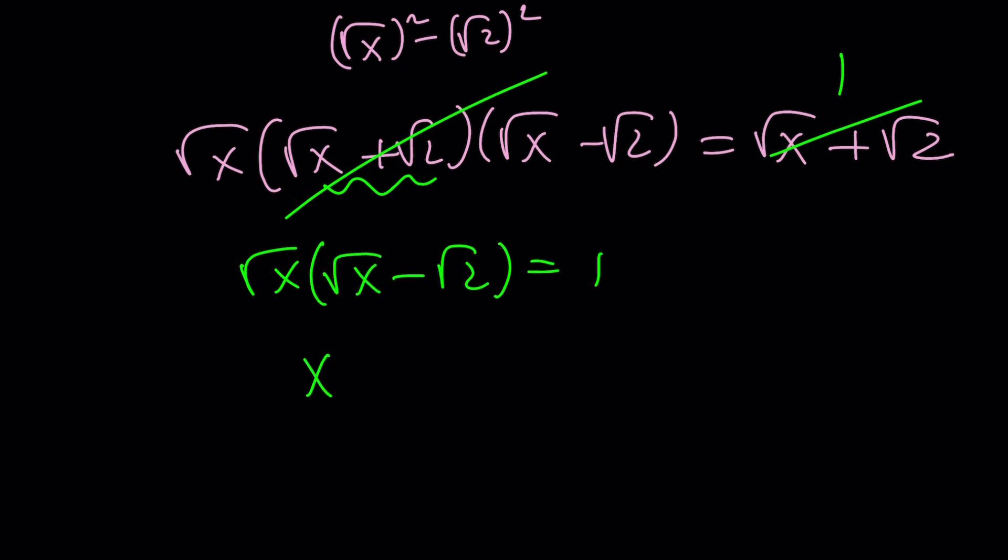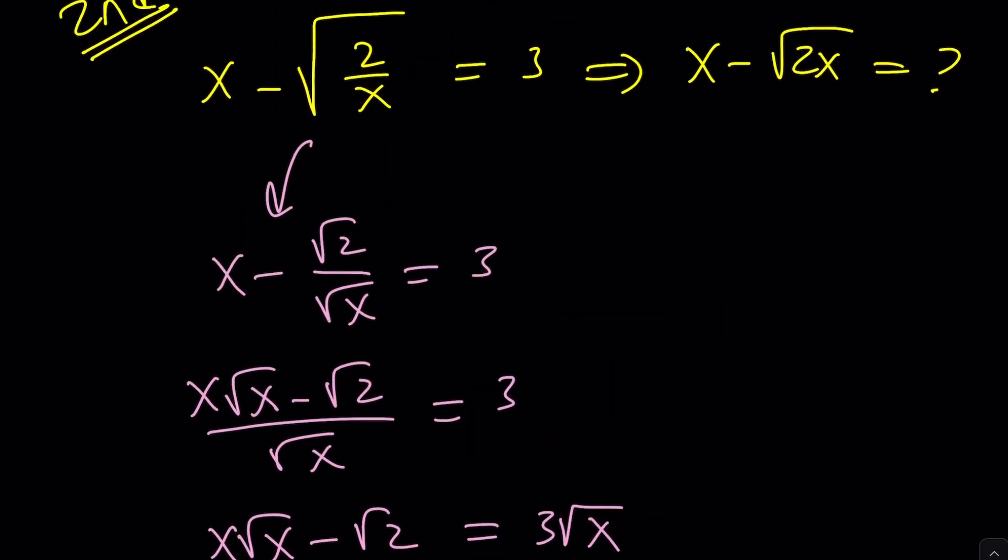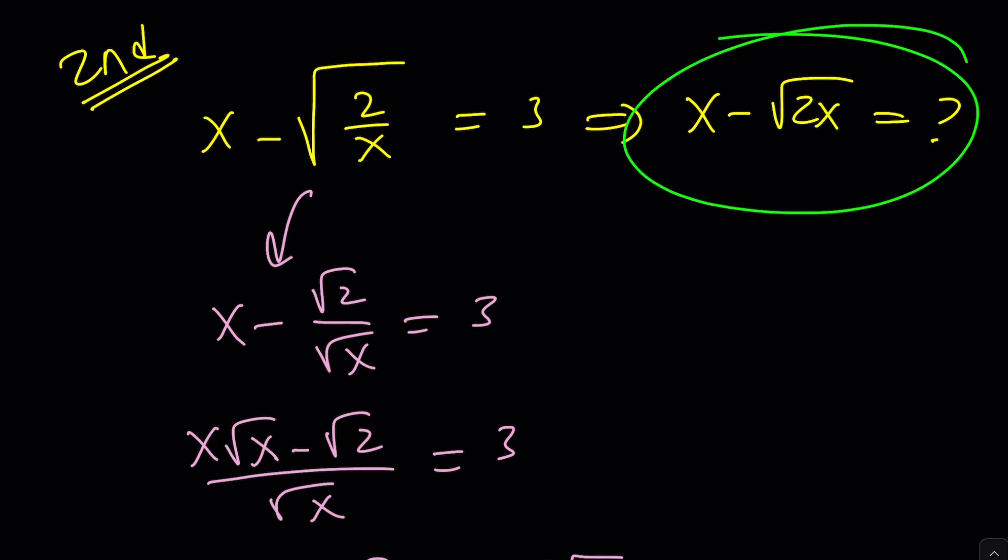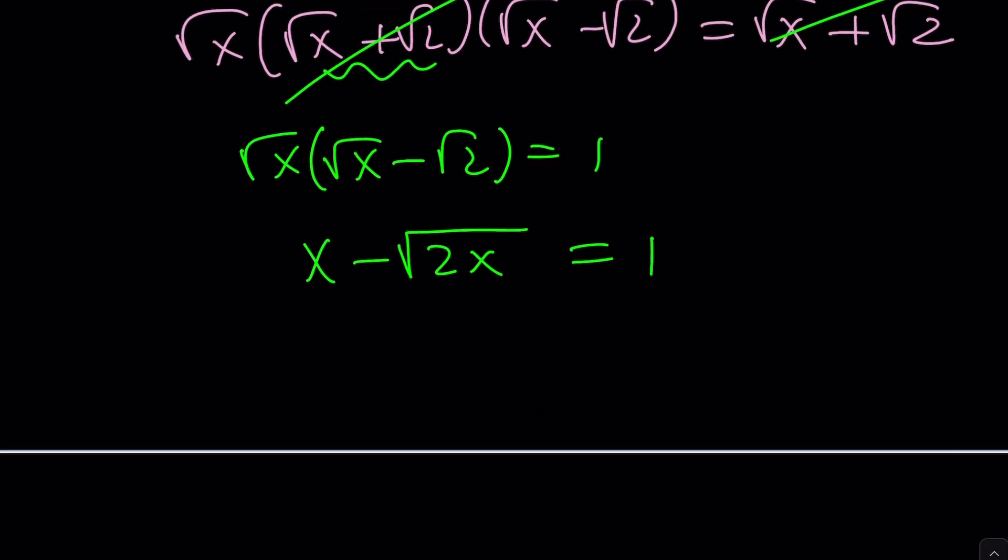And now, we end up with 1 here, and we get square root of x times square root of x minus the square root of 2 is equal to 1. If you distribute, you get x minus root 2 times square root of 2x equals 1. What are we looking for? We're looking for exactly that. So, the answer is 1.